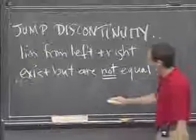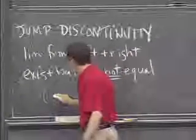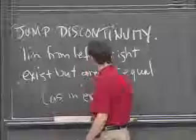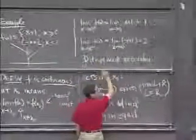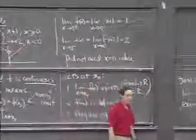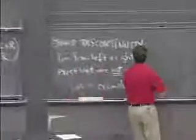OK, so that's as in the example. Right, in this example, the two limits, one of them was 1 and one of them was 2. So that's a jump discontinuity.